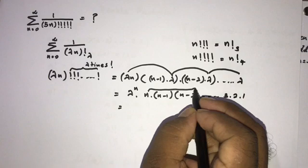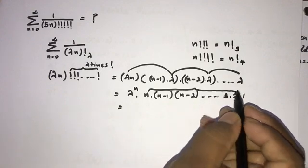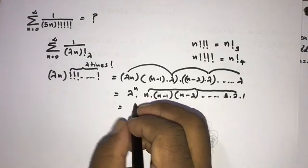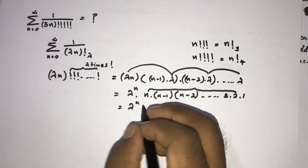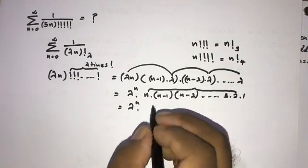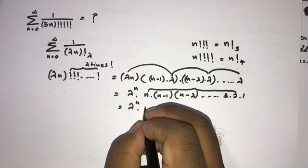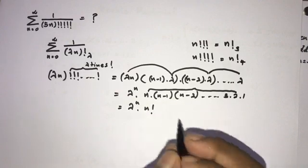Factoring out lambda from each of the n terms, we get lambda to the n power times n factorial. So (lambda·n)!⁽λ⁾ equals lambda^n times n factorial.